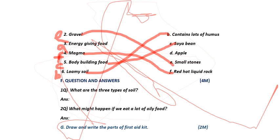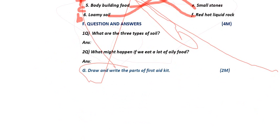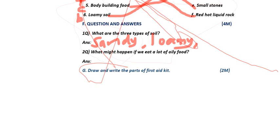Now moving to the F bit. First question: what are the three types of soils? Sandy soil, loamy soil, and clay soil. Sandy is spelled S-A-N-D-Y, loamy is spelled L-O-A-M-Y, and clay soil is C-L-A-Y-E-Y. So you need to write: there are three types of soils — sandy soil, loamy soil, and clay soil.